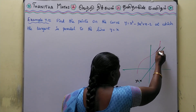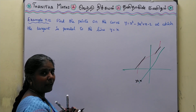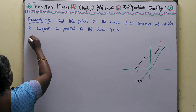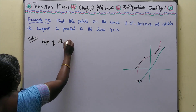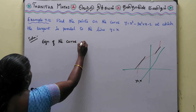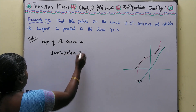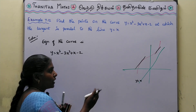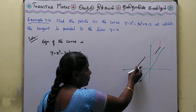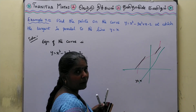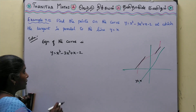If the tangent angle is parallel to the line, and we have parallel lines over the line y = x, then the equation of the curve is y = x³ - 3x² + x - 2. If we know the lines are parallel, the slope of the curve equals the slope of the line. We find the slope by differentiating with respect to x.